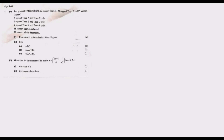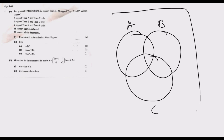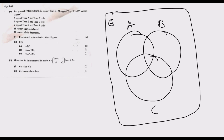First, let us draw the three sets. We have set A, set B, and set C, with the Venn diagram boundary outside. The starting point is to ask: are there elements found in all three sets? In this case, yes — we are given that 10 fans support all three teams. So we place 10 in the middle where all three sets intersect.